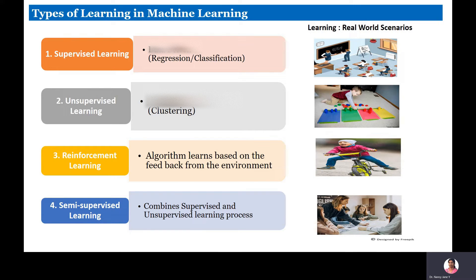Now let's see the types of learning in machine learning. How effectively we learn from experience is our objective. In this learning process, there are various styles: supervised learning, unsupervised learning, reinforcement learning, and semi-supervised learning. These are the four major types of learning.